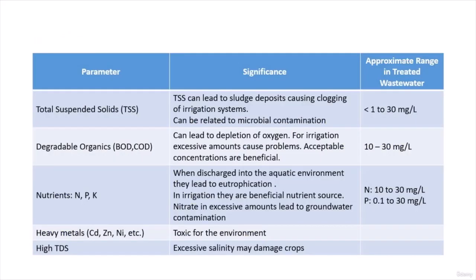Let's go through each parameter to understand its significance for wastewater reuse. If our water has a high TSS, this will lead to clogging of the irrigation system — that is the main problem of high TSS. That's why we need to lower it to less than 30; the lower the better. It can also be related to microbial contamination.